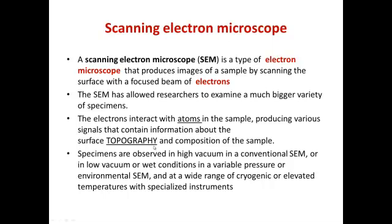The beams of electrons that strike the different surfaces of the specimen can produce an image in terms of the reflected beam of electrons. The specimens can be observed in high vacuum in conventional SEM, or in low vacuum or even wet conditions in a variable pressure or environmental SEM, at a wide range of cryogenic or elevated temperatures with specialized instruments.